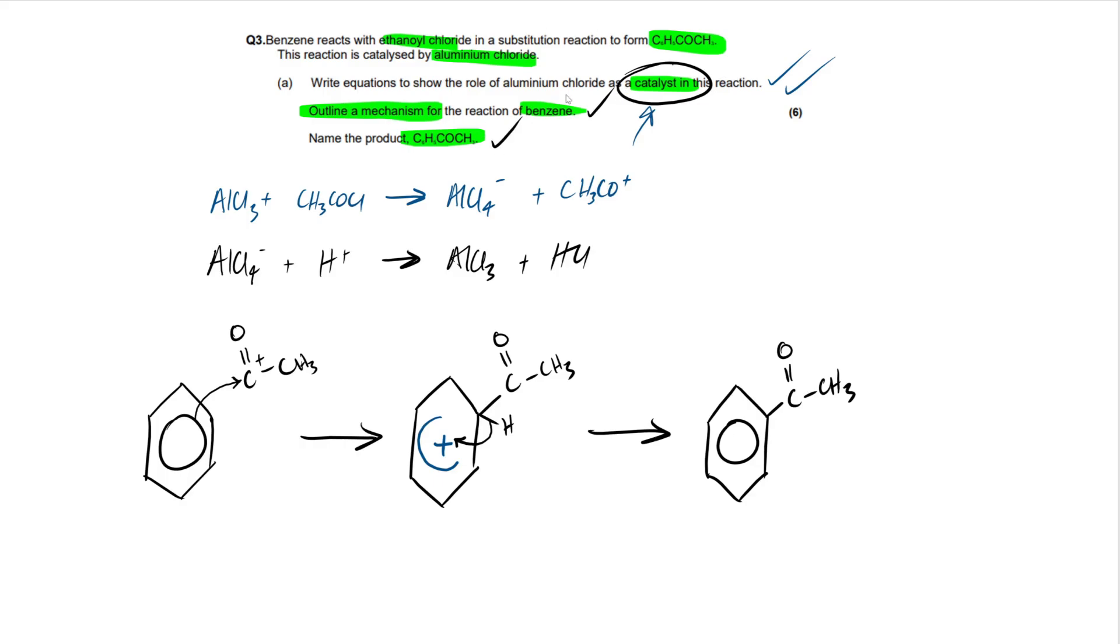Now we've done the mechanism here. Now what do we have to do? We have to name this product. So pause the video, think to yourself, you may have already done this when you were doing the mechanism, but think to yourself, how do we name this product? So what functional groups do we have present here? So we have a ketone group right here and we have a benzene group.